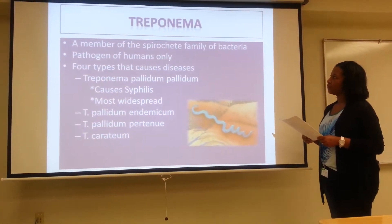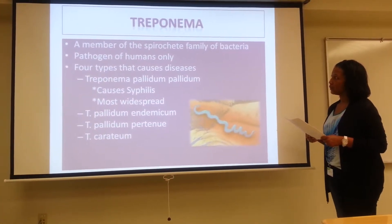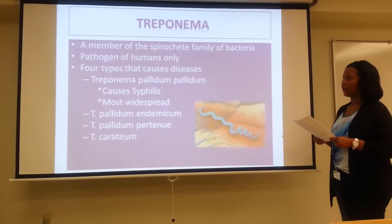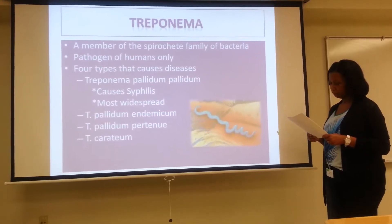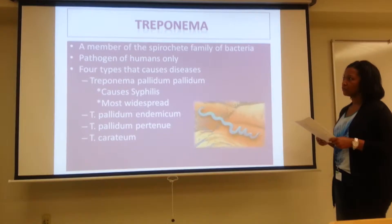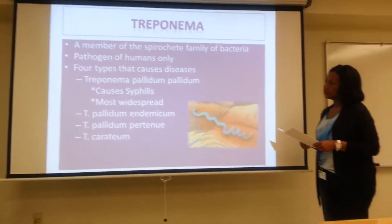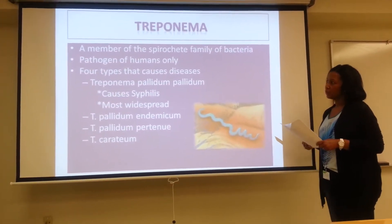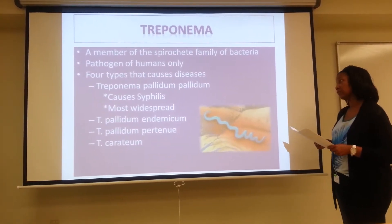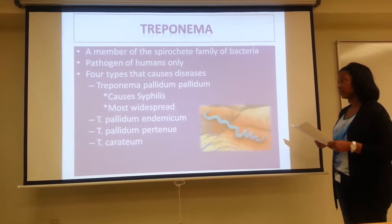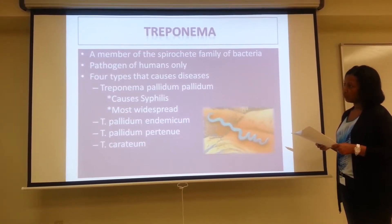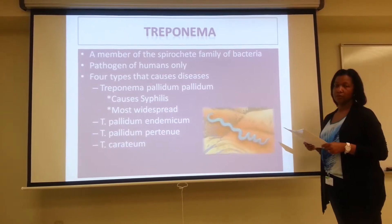Treponema is a member of the spirochete family of bacteria. It is a bacterial pathogen that also infects humans. There are four types of Treponema that cause diseases. The first one is Treponema pallidum pallidum, which is sexually transmitted and causes the sexually transmitted disease syphilis. This type of Treponema is the most widespread.